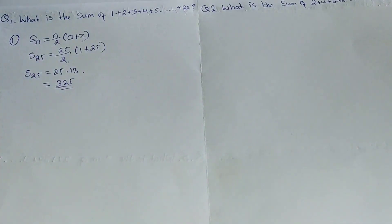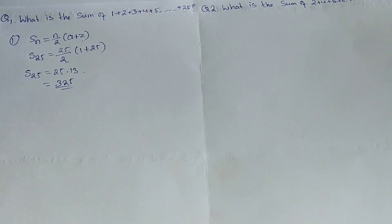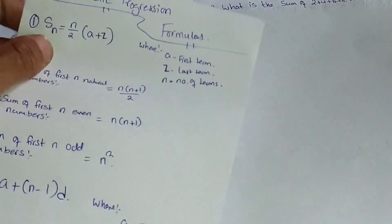So the sum of 1 plus 2 plus 3 plus 4 plus 5 and so on up to 25 is 325. Using this formula, you can find the sum of any arithmetic progression. You need to identify the first term, the last term, and the number of terms, then apply the general sum formula.